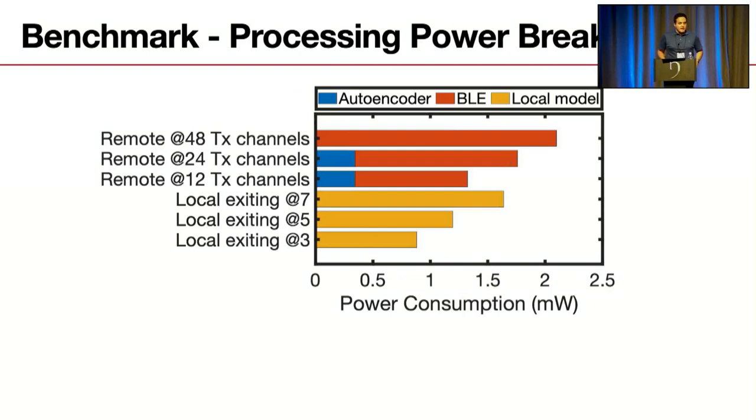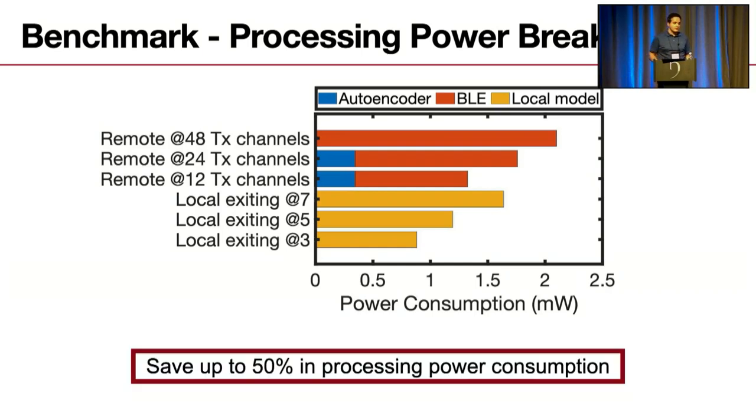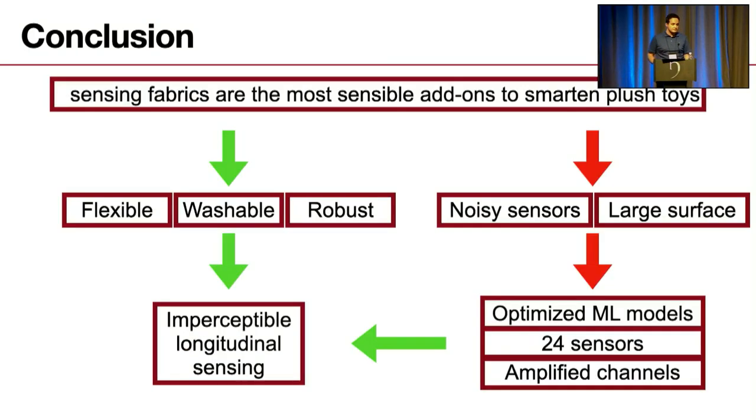Next, we broke down the processing power in six different scenarios: three remote and three local. For the three remote and three locals, we tuned the power saving for the remote with tuning the autoencoder, for the local by exiting earlier in the neural network model. As you can see, we can always save up to 50 percent power consumption by choosing the tuning factor. I want to conclude my talk by...